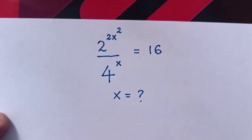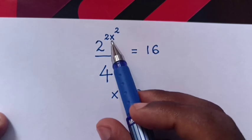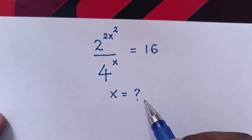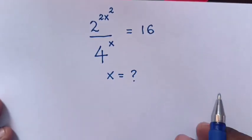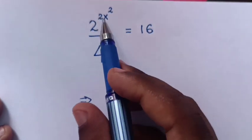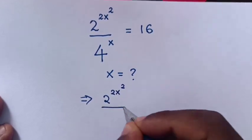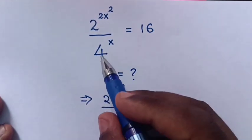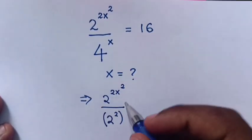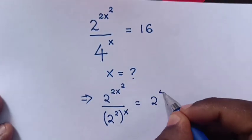Hello. How to solve this exponential equation: 2 power 2x squared over 4 power x is equal to 16, to find the value of x. From our equation, write 2 power 2x squared over 4 power x. Note that 4 is the same as 2 squared, so 4 power x is the same as 2 squared bracket power of x, and 16 is the same as 2 power 4.